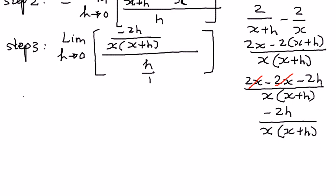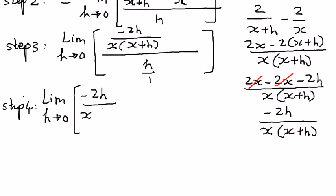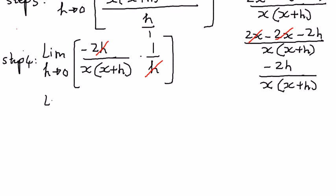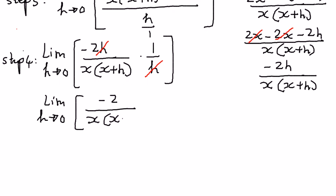In step number 4, I'm going to write this as limit as h approaches 0. I can write this as negative 2h divided by x times x plus h, times 1 over h. The reciprocal of h over 1 is 1 over h. So now we have an h in the numerator and an h in the denominator — we can cancel them out. Therefore, this simplifies to: limit as h approaches 0 of negative 2 divided by x times x plus h.